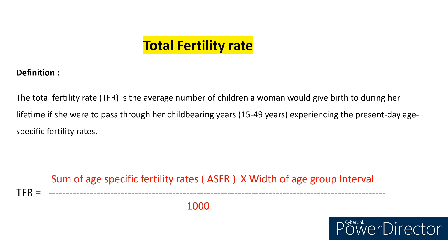Whenever I say age-specific fertility rates, there are three different ranges — for example, 30 to 35, 35 to 40, 40 to 45. We need to calculate age-specific fertility rates for all three groups, then multiply by the width of the age group interval. Whenever I say width of age group interval, in this example I said 30 to 35, so the width will become 5. So we need to multiply with 5 and divide by 1000.